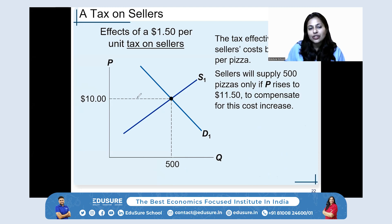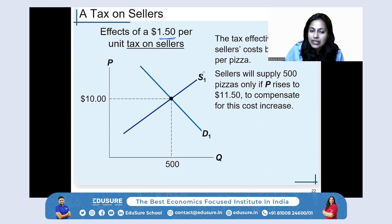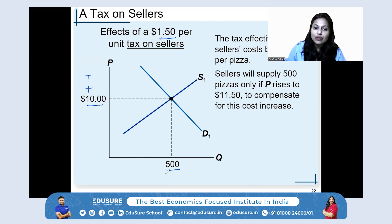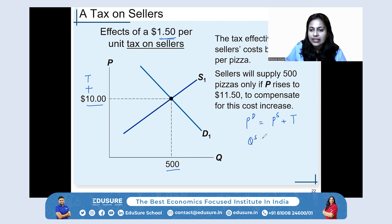Now let's see what happens if the tax is imposed on the sellers instead of the buyers. There's a $1.5 tax on the seller. The supply curve shows quantities and prices the supplier wants. With a tax, the price buyers pay equals what suppliers receive plus the tax amount. So we add the tax to the supplier's price — how does that shift the supply curve?